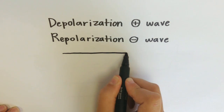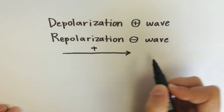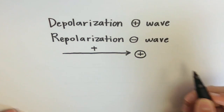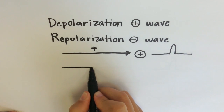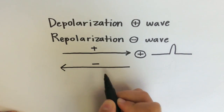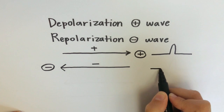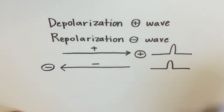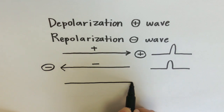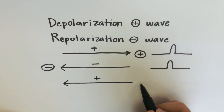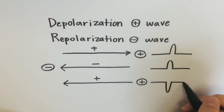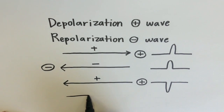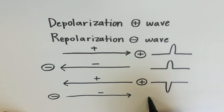A positive depolarization wave moving towards a positive electrode will give us an upright wave. And if we have a negative repolarization wave moving towards a negative electrode, that will also give us an upright wave. If we have a positive depolarization wave moving away from its positive electrode, that will give us a downward wave. And if we have a negative repolarization wave moving away from its negative electrode, that will also give us a downward wave.